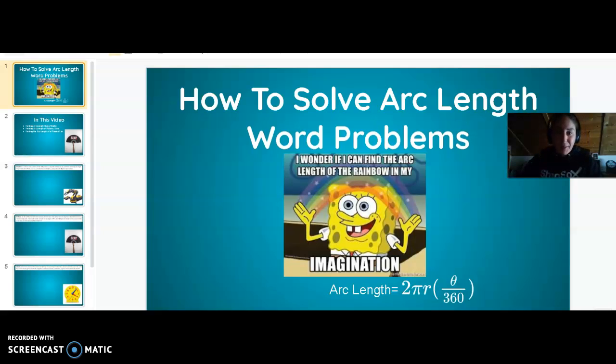Hey everybody! Welcome to How to Solve Arc Length Word Problems. We are going to live in this equation right here. Arc length is going to be equal to 2π times the radius times θ over 360, where θ is going to be the actual amount of degrees or radians that we've gone around to calculate this arc.